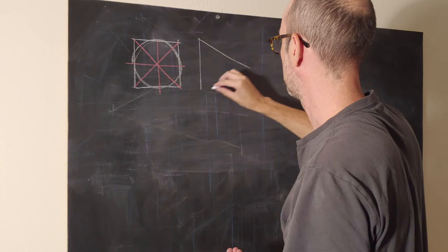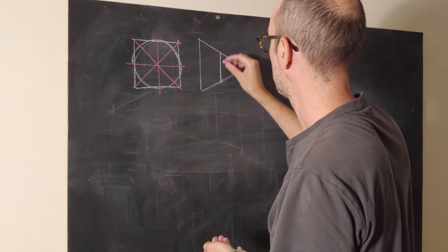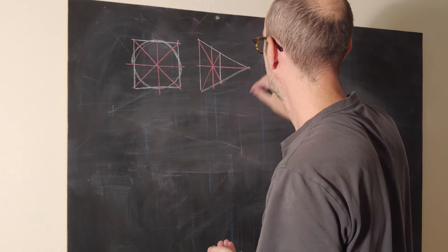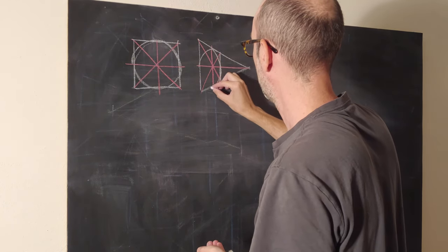And this is what we would do with most shapes, but it doesn't work super well with circles. Because when we do this, we create a wonky circle.